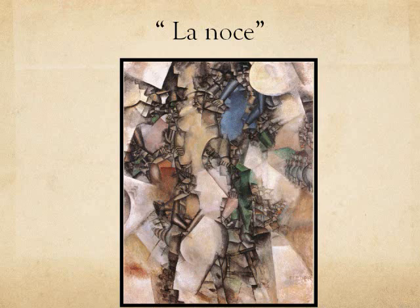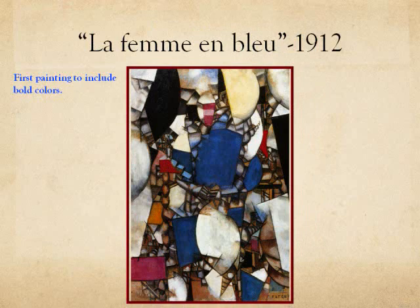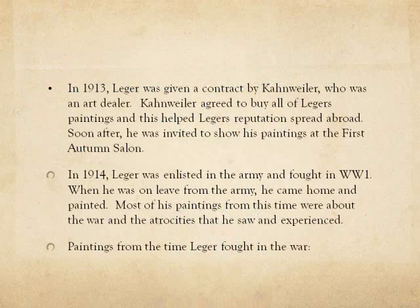The arrangements of faceted, interlocking white figures may represent white smoke, and the small areas of color go against the more somber colors of the painting. Léger painted Le Passage à niveau Bleu in 1912, which marked a change in his paintings and was one of his first to use bold colors. In 1913, Léger was given a contract by Kahnweiler, who was an art dealer. Kahnweiler agreed to buy all of Léger's paintings, and this helped Léger's reputation spread abroad. Soon after, he was invited to show his paintings at the first Autumn Salon.